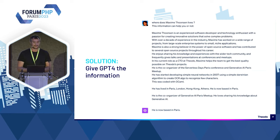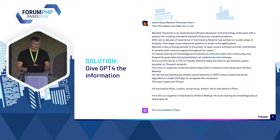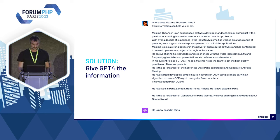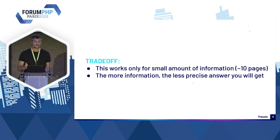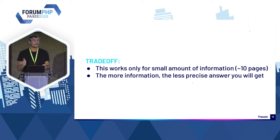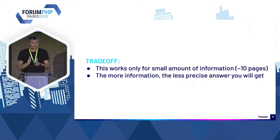Pour y arriver, il faut ce que font toutes les apps d'IA générative : on va donner en même temps que la question plein d'autres informations. Si on lui demande où habite Maxime et qu'on lui donne un gros pavé d'informations avec plein d'infos sur moi — notamment où j'habite — il peut répondre. Le problème, c'est qu'on ne peut pas à chaque fois envoyer toutes les informations à ChatGPT : on va être vite limité à environ 10 pages, et ça ne scale pas du tout.